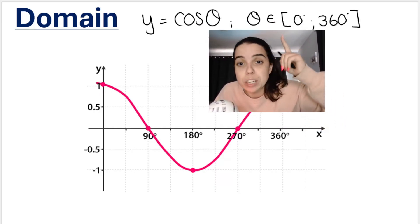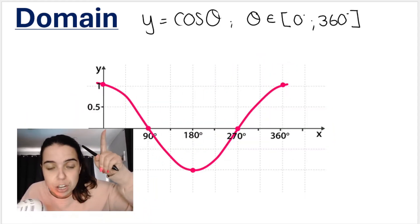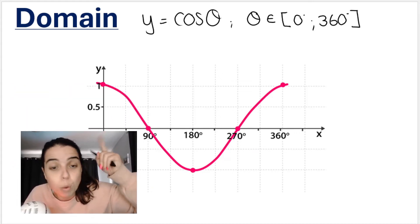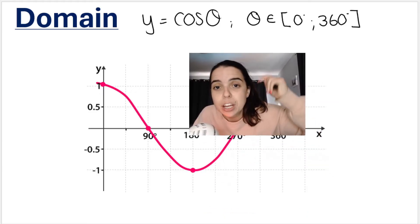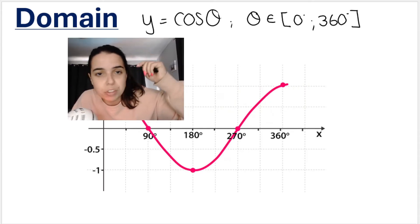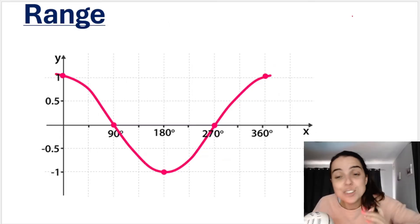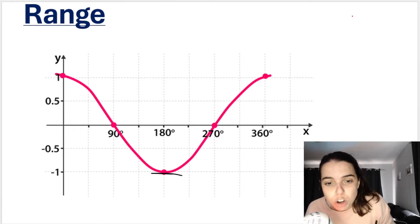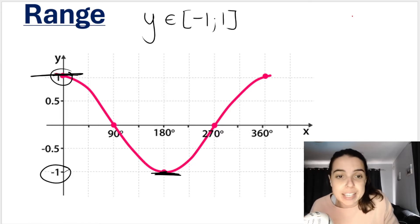Again, notice how I'm using square brackets. Square brackets means including. My x values start from 0; the graph starts where x is 0 or where theta is 0. It's including that value all the way to 360; it includes that value. You must say theta is an element of, or if the graph said y equals cos x, then it would be x is an element of. Remember range or your y value, so where does the graph exist for which y values? We start with this y value. The minimum is at negative one, the maximum is at one, so y is an element of negative one to positive one. We use square brackets because it's including those values.